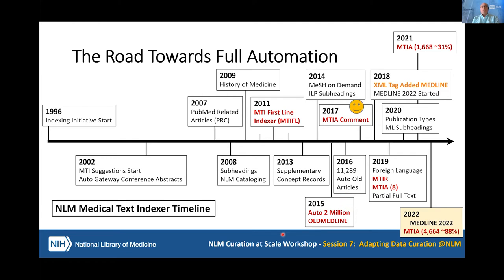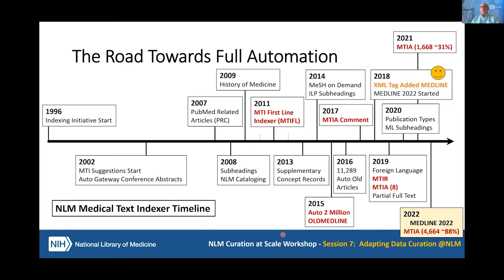In 2017, we started automatically indexing comments — if an article commented on another article, the MeSH terms from the commented-on article would be added to the comment. With MTI, we've taken the new article and re-indexed it as well as using the title from the previous article. As we expanded automation, we realized people using the data would want to determine what was automatically indexed versus not. So in 2018, we added an XML tag called the indexing method, which spells out if it was automatically indexed, curated by a human, or a mix. If there's no indexing method tag, it means it was fully indexed by a human.